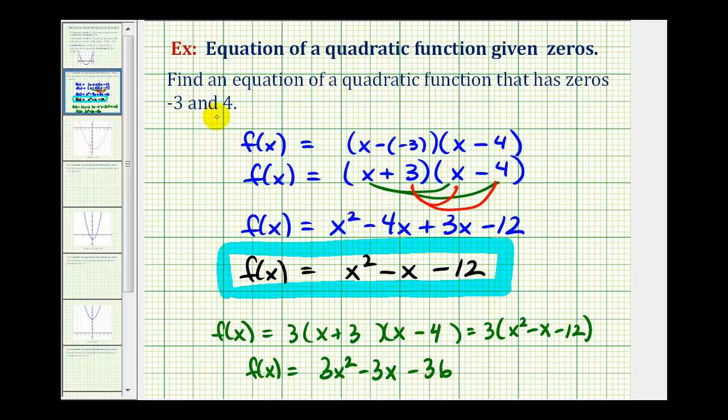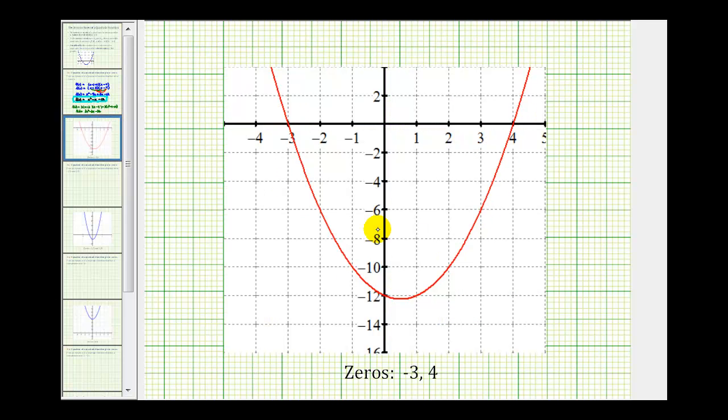And to finish, since our zeros are real, we can graph this function to make sure that our x intercepts are negative 3 and positive 4. So here's the graph of our function. Notice how the zeros are here at x equals negative 3 and here at x equals positive 4.